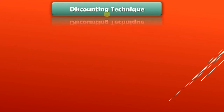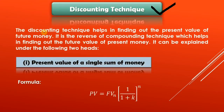Next comes the discounting technique. The discounting technique helps in finding out the present value of future money. It is the reverse of the compounding technique. Whatever money you expect to receive in the future, you want to know the value of that money in today's terms — that is your present value.